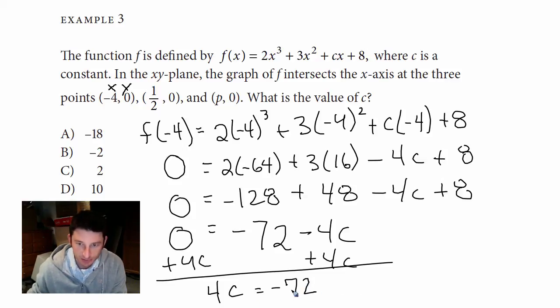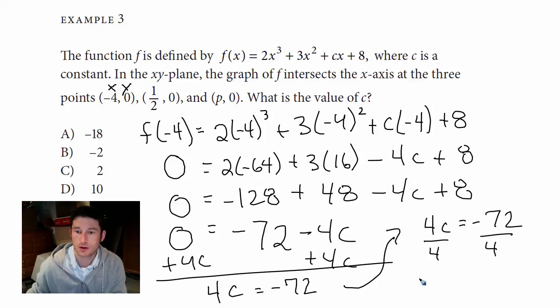Sorry I'm running out of space here, but let me do it over here. 4c = -72, divide both sides by 4, and we should get c.